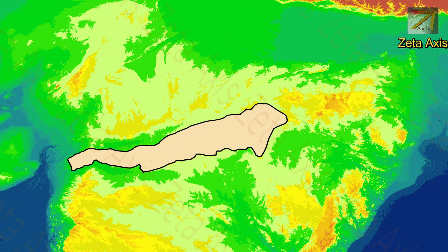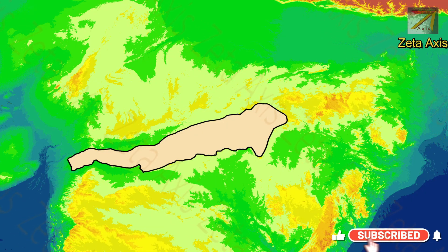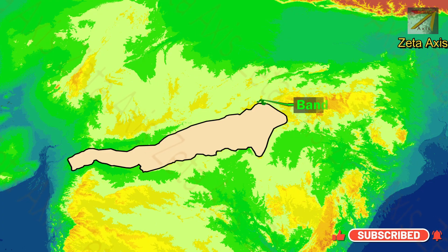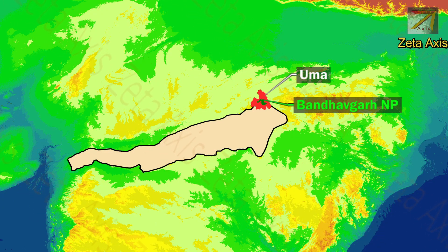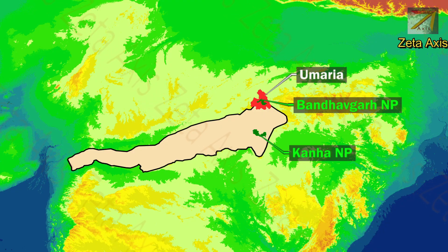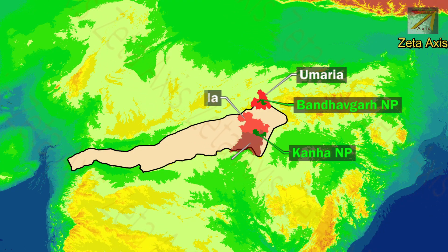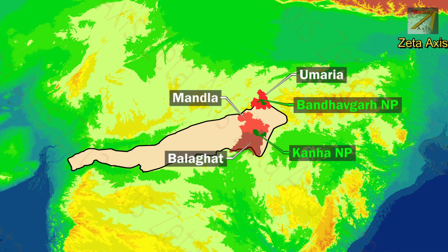Now let's see some of the important protected regions in Satpura hills. Bandhavgarh National Park is located north of Amarkantak in Umaria district of Madhya Pradesh. Kanha National Park is a national park and a tiger reserve located in Mandla and Balaghat districts. Royal Bengal Tiger, Leopards, Sloth Bear and Barasingha are found here.